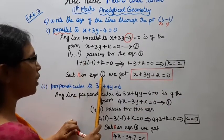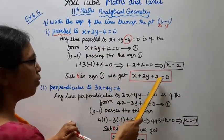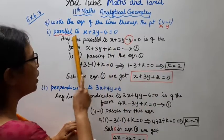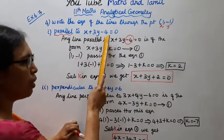Substitute k in equation 1. Then x + 3y + 2 = 0, parallel to the given line.